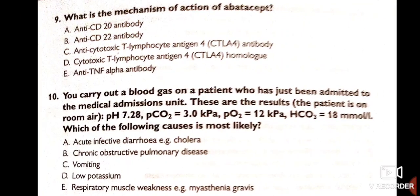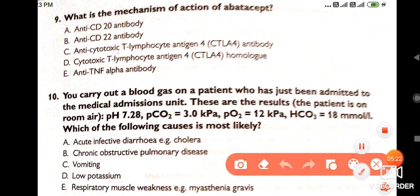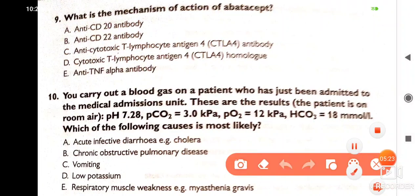What is the mechanism of action of abatacept? It acts as a cytotoxic T-lymphocyte antigen 4 (CTLA-4) homolog.